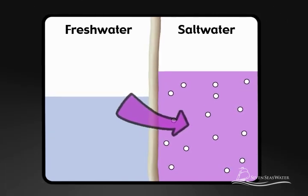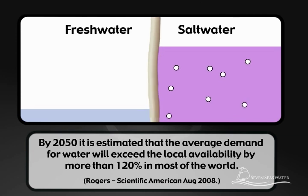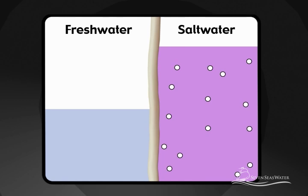In nature, the direction of flow through the membrane is from a less concentrated solution, such as freshwater, to a more concentrated solution, such as seawater, until equilibrium is reached.